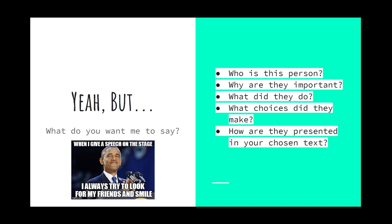So what do you actually have to do for this assignment? I need you to tell me who is the person or the place you've chosen, but I don't want you to give me a full biography. I want you to get to the interesting stuff: why are they important? What have they done that's valuable? What choices did they make that brought them to your attention? Why do you find them fascinating, infuriating, loveable, or hateful?